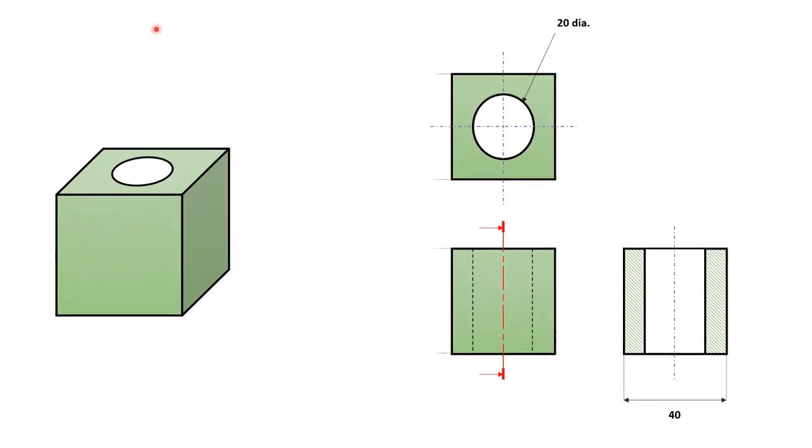Just to show an example of a typical application, this is basically a construction line. This is a projection from the given geometric views, and you use your construction line other than the head of the arrow for the dimension.